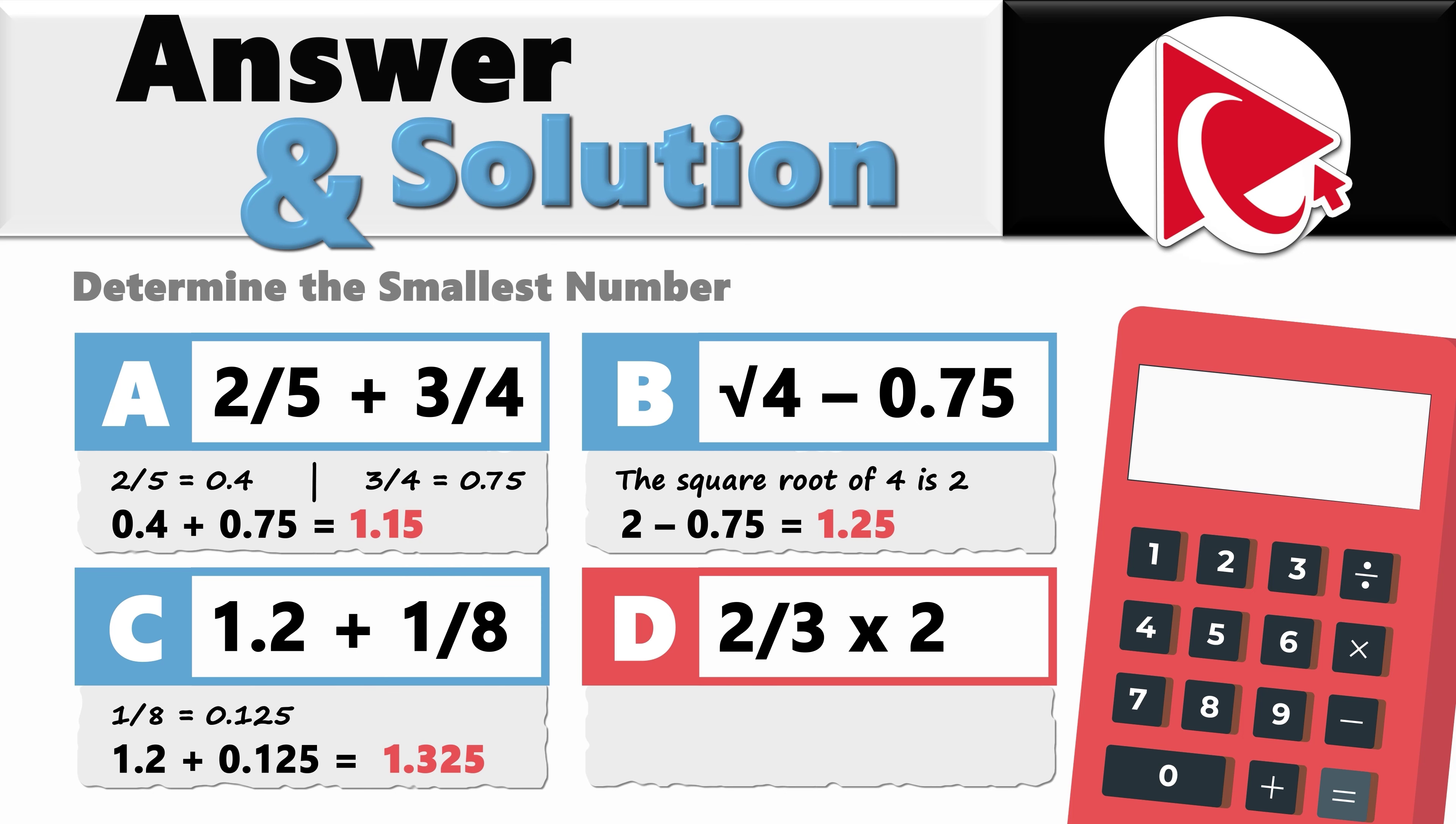And in choice D, we have 2/3 multiplied by 2. 2/3 multiplied by 2 equals 4/3. And 4/3 equals 1.33, since the number of digits after the decimal point goes into infinity.